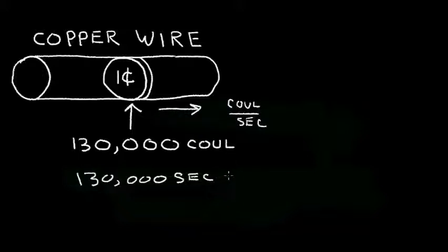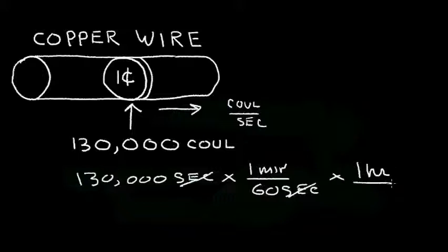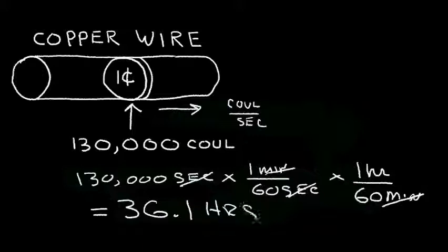Now let's convert that to minutes. We know that one minute equals 60 seconds, and so our seconds will cancel out, and we'll be left with minutes. But let's convert that to hours. We know one hour equals 60 minutes. Our minutes will cancel here, and we'll be left with hours. And when we divide by 60 twice, we'll get 36.1 hours.